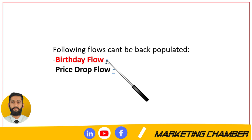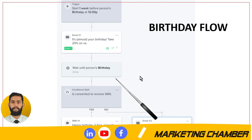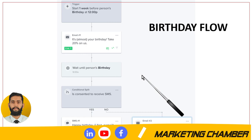The reason birthday flows cannot be back populated is because if someone's birthday has already passed, it does not make sense to include them. For example, if today is 29/11/21 and someone's birthday was on 25/11/21, we cannot send a birthday email. Here you can see the birthday flow — if someone's birthday has passed, we cannot turn on back populate.